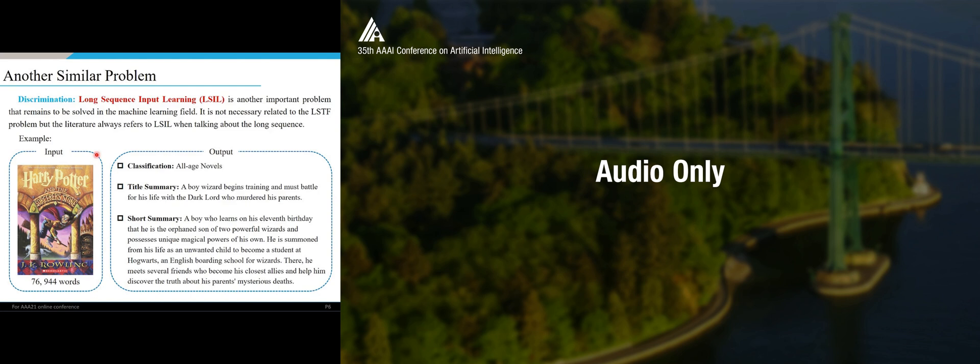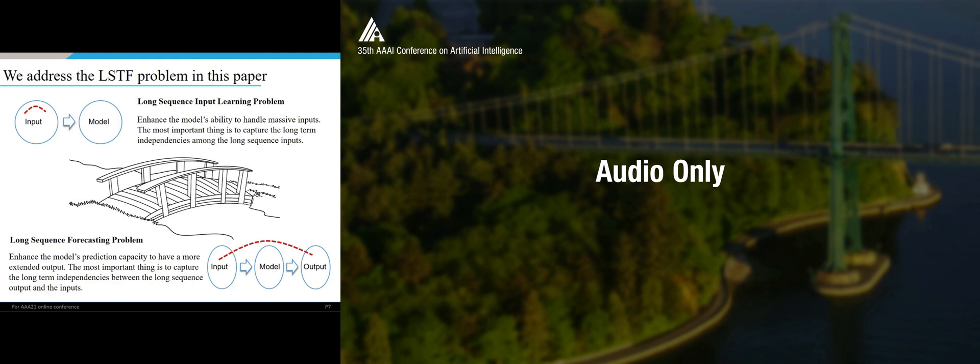There is also another similar problem - the long sequence input learning problem. Here is an example. If you put Harry Potter, the whole book is about 80,000 words into this model, and output maybe classification or a genre of novels, title summary, a sentence, short summary, a paragraph. The question is, the question remains is the long dependency among the inputs. That is because the whole book is a long sequence input learning problem is trying to enhance the model's ability to have massive inputs.